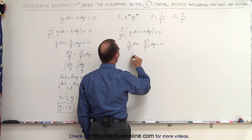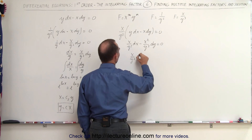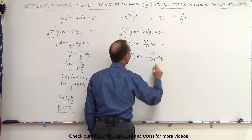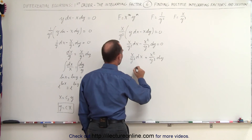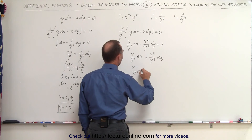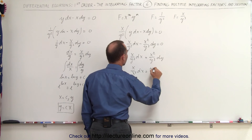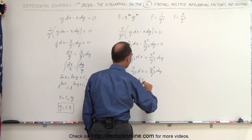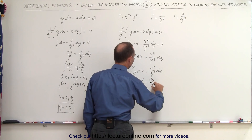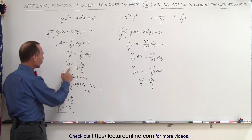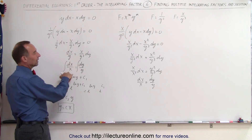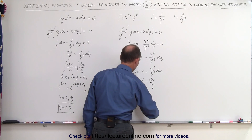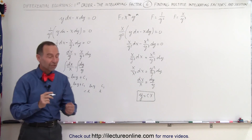Separating variables, x over y squared dx equals x squared over y cubed dy. Moving y's to one side and x's to the other, we get x over x squared dx equals y squared over y cubed dy, which simplifies to dx over x equals dy over y — the exact same differential equation as before. Integrating both sides, the solution is again y equals c times x.